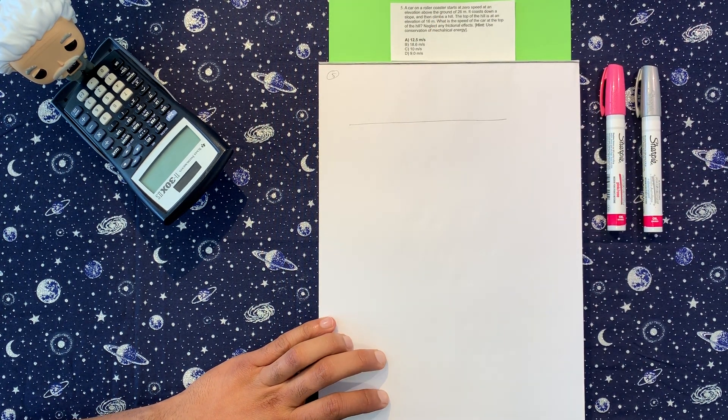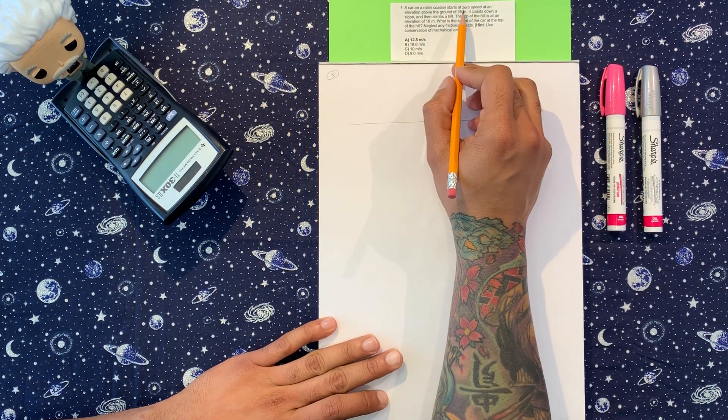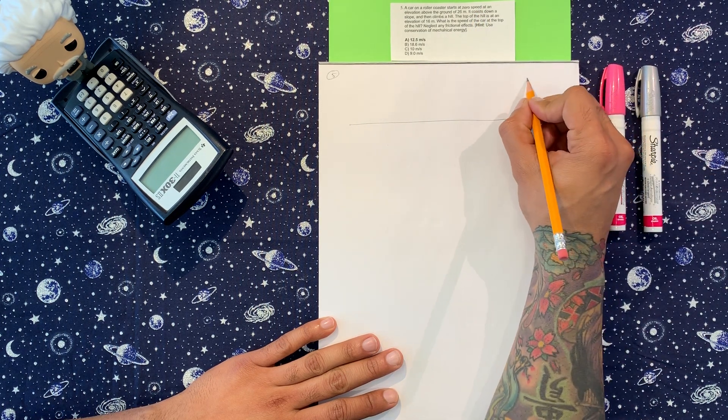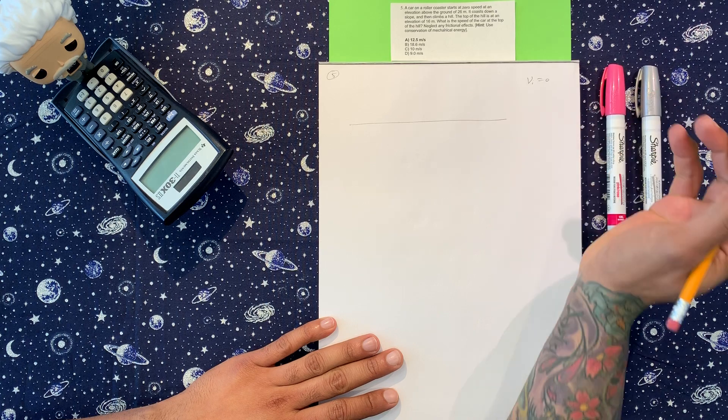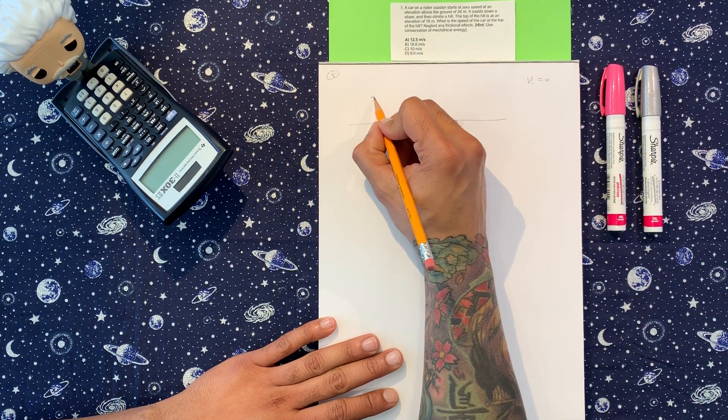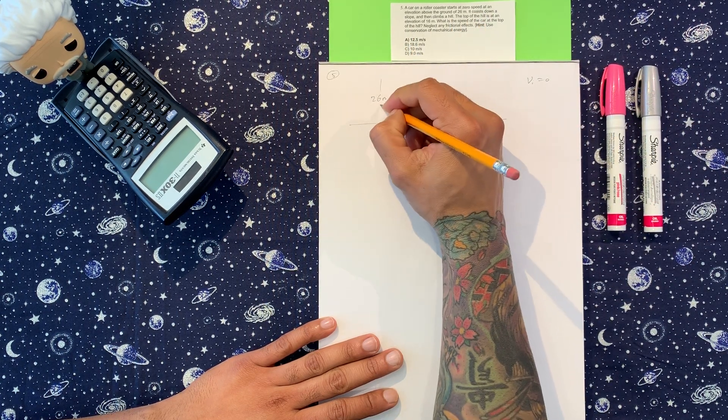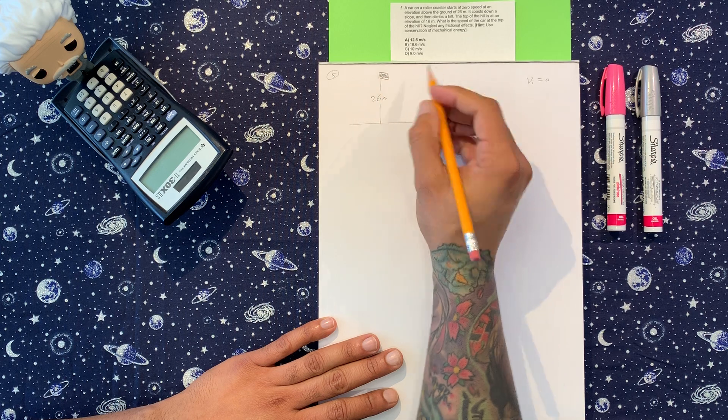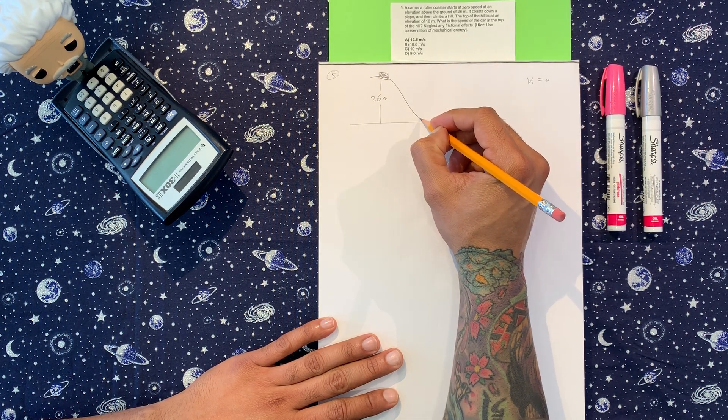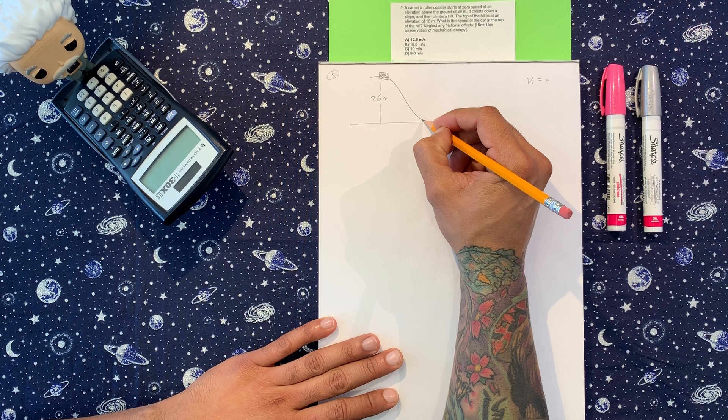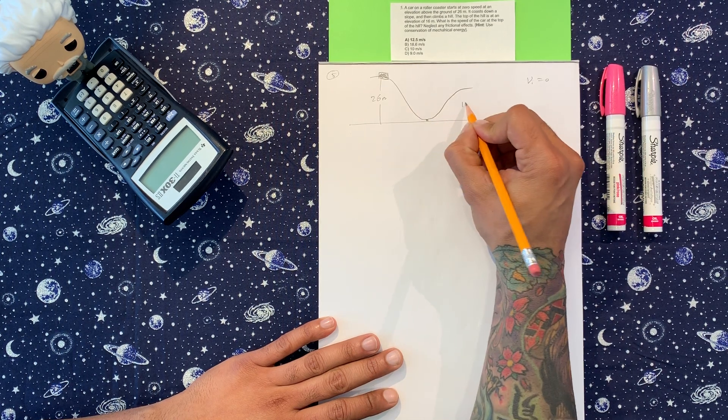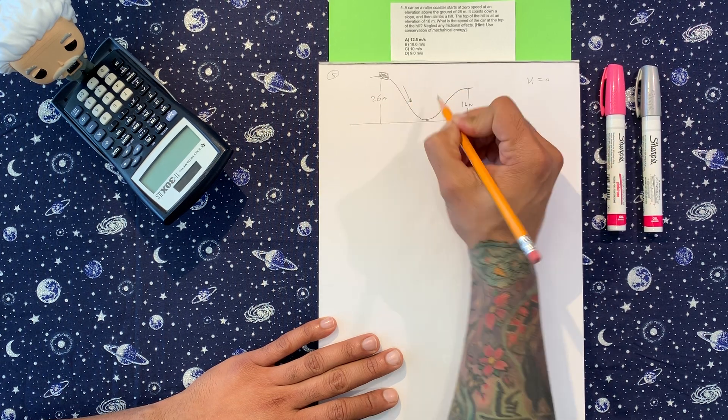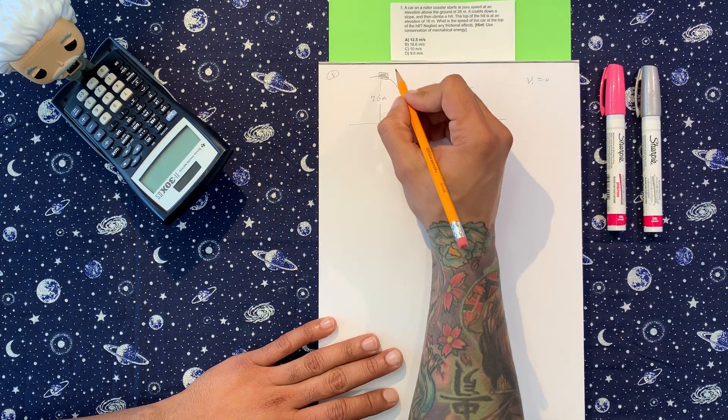So we've got a roller coaster. We're gonna put the ground right here, and then it says the car starts at zero speed, so right there we need to put initial velocity zero. It's at an elevation of 26 meters above the ground, so somewhere here the car starts and it goes down like this, and then it climbs a hill up 16 meters. So it hits the ground there and then 16 meters here, so it goes down like this and then goes back up like that.